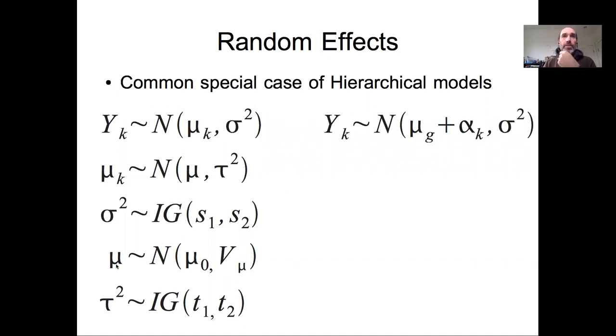The idea of a random effects model is we can rewrite this process model y_k as y_k follows some global mean mu_g plus some alpha_k, which is the difference between that dataset's mean and the global mean. You could rewrite this mu_k as mu_k equals mu_g plus alpha_k, so alpha_k is just the difference between mu_g and mu_k. It's mathematically equivalent - the same model - we've just reorganized our process model to express the hierarchical effect in terms of how this particular parameter differs from the global parameter.